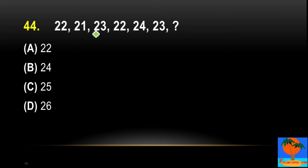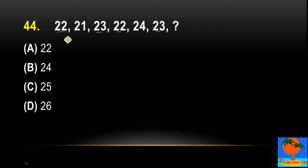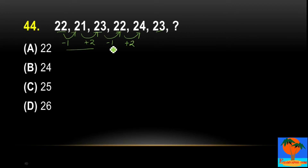The next one: 22, 21, 23, 22, 24, 23. I can see the pattern. Let's check: 22 to 21 is minus 1, and 21 to 23 is plus 2, and 22 again. So what should be my pattern? It is minus 1, plus 2, minus 1, plus 2. So 24, 23 — what will happen? First minus 1, and then here plus 2. So my answer should be 25.